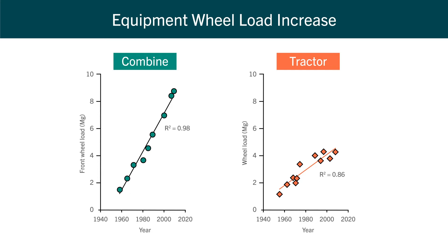If you look at the tractor on the solid red line, the rear wheel load has gone up about two times. But as soon as you put a plow on the tractor and you're out in the field, your effective rear wheel load goes up almost three times. So across the board, whether you're doing spring tillage or fall work or harvesting on your combine, there's a lot more weight going on your field than at any other point in history.